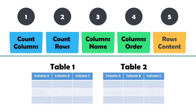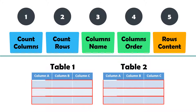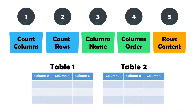Finally, we check whether the content of the two tables is the same — that means the content of each line is checked. If these five requirements are met, both tables are the same. If only one requirement is not met, the tables are not identical.